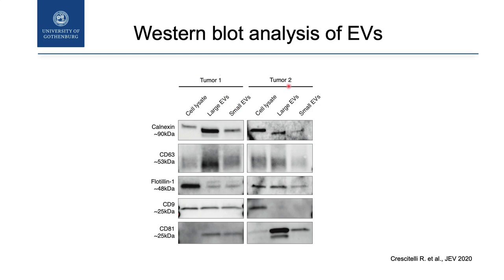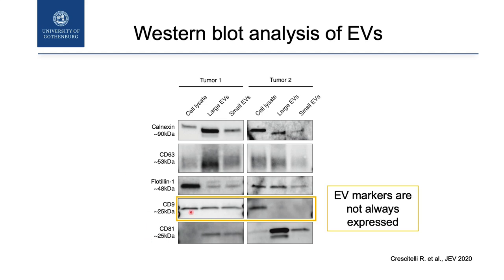In samples coming from melanoma tissue, we found CD9 in cell lysate as well as large EV and small EV. But in another sample, still melanoma tissue, we do not find CD9. The message is: try to find the tetraspanins that are typical of extracellular vesicles — but if you don't find them, it's not the end of the world. It simply means the samples are different.